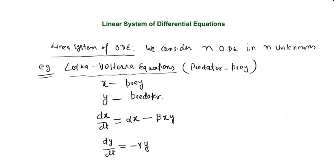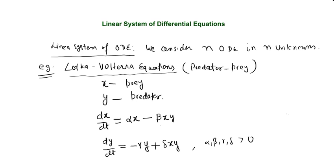Adding the interaction terms: the change in prey numbers is growth minus the rate at which it is preyed upon. Similarly, the predator equation gains a term delta*x*y since having food increases their population. So all parameters alpha, beta, gamma, delta are positive constants, giving us the full 2 by 2 Lotka-Volterra system.